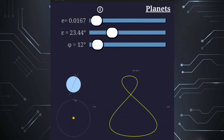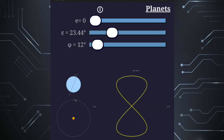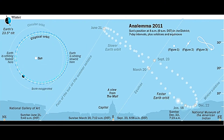If the earth's orbital path was circular, its axial tilt would have the effect of generating a perfect figure eight analemma curve, such that the top and the bottom loop would be the same size.